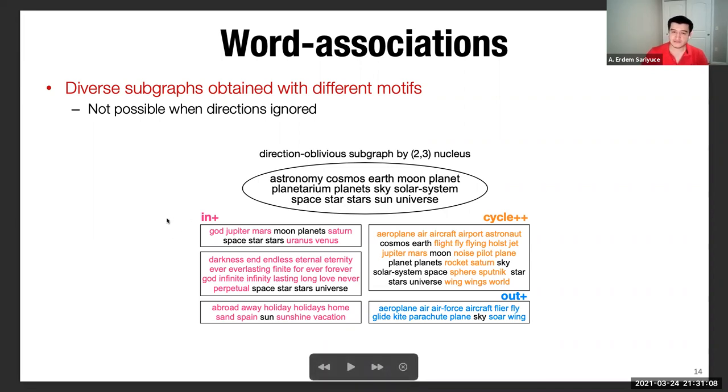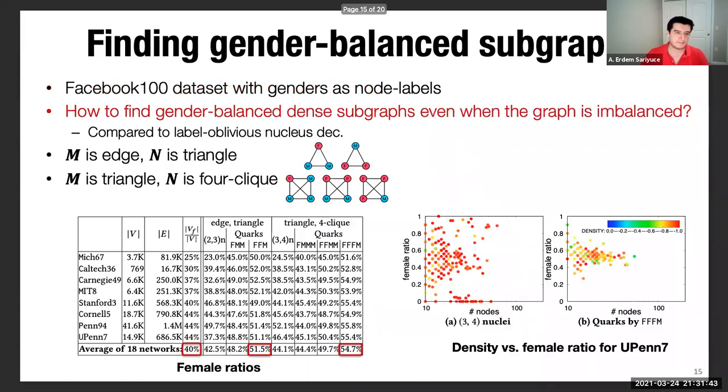For instance, in-plus gave three different contexts for those words. One is in the astronomy context. The other is more like the religious context, because it's basically coming from this universe or space, that kind of things that may have different meanings in different contexts. And also a subgraph in the holiday theme. Likewise, cycle plus and out cycle plus and out plus gave different contexts. In overall, we were able to obtain diverse subgraphs by using different motifs, which was not possible if you just go with directional oblivious methods.